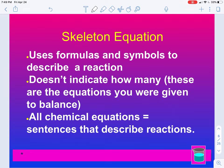Now, there's what is called the skeleton equation. The skeleton equation uses formulas and symbols to describe a reaction. It doesn't indicate how many. So this here is the type of reaction that you were given when you were asked to balance. When I was asking you to balance, you would go through and add the coefficients in front. When you are done, you would have a balanced equation with the coefficients. When the coefficients aren't there, it's called the skeleton equation. And all chemical reactions can be written as sentences that describe that reaction.